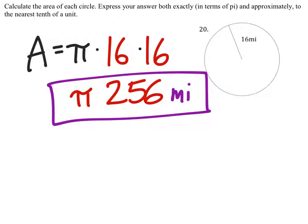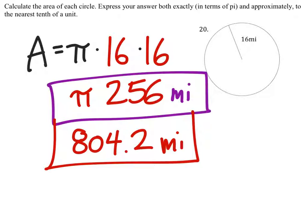to get the approximation, which is 804.2 square miles. Two answers for the area.